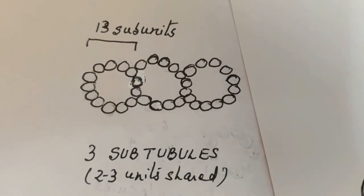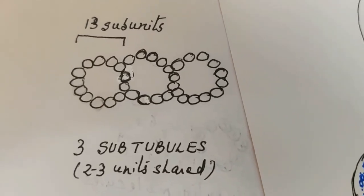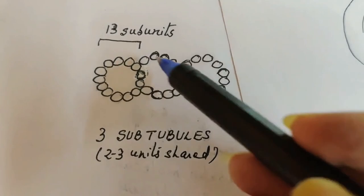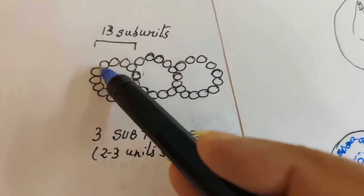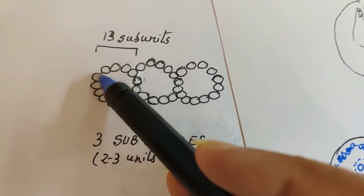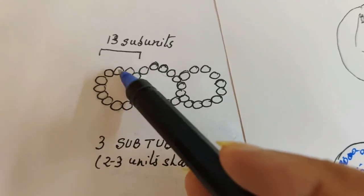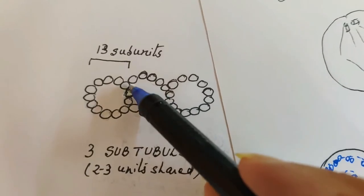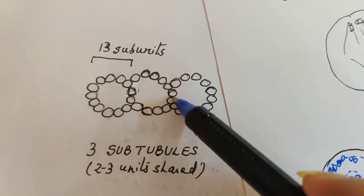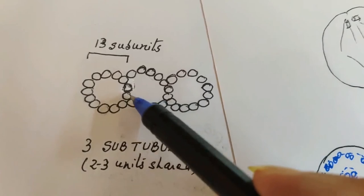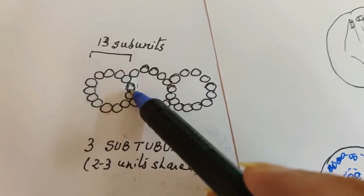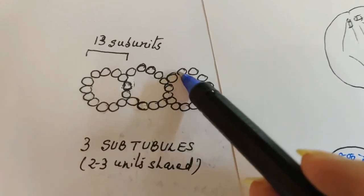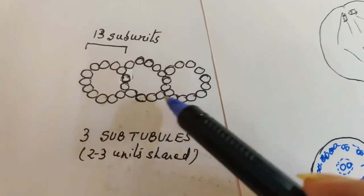Triplet: how it is made up of tubulin units. Each of this has 13 subunits, 13 dimers of tubulin, and since there are 3 of them they would be sharing 2 to 3 units between them. So first one will have complete 13 while others will have 2 or 3 less, and this is how they are arranged, the triplet.